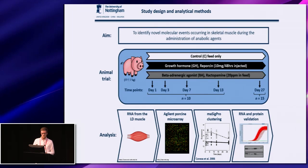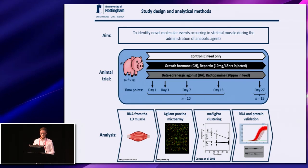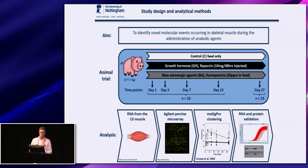Because of the time course nature and the multiple treatments, there became a problem in how to analyze that amount of data. We used something called a MARSIG-PRO clustering method — an algorithm which tries to group clusters of genes displaying a similar temporal expression profile in response to treatment and time. This was really interesting and pulled out a lot of interesting data. We then followed up some of these targets with RNA and protein validation.